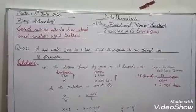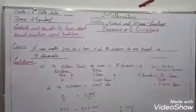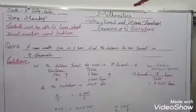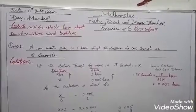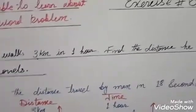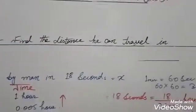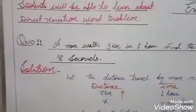Assalamualaikum students, today we will do Exercise 6, question number 11 to question number 13. Question number 11: a man walks 3 km in one hour — find the distance he can travel in 18 seconds.